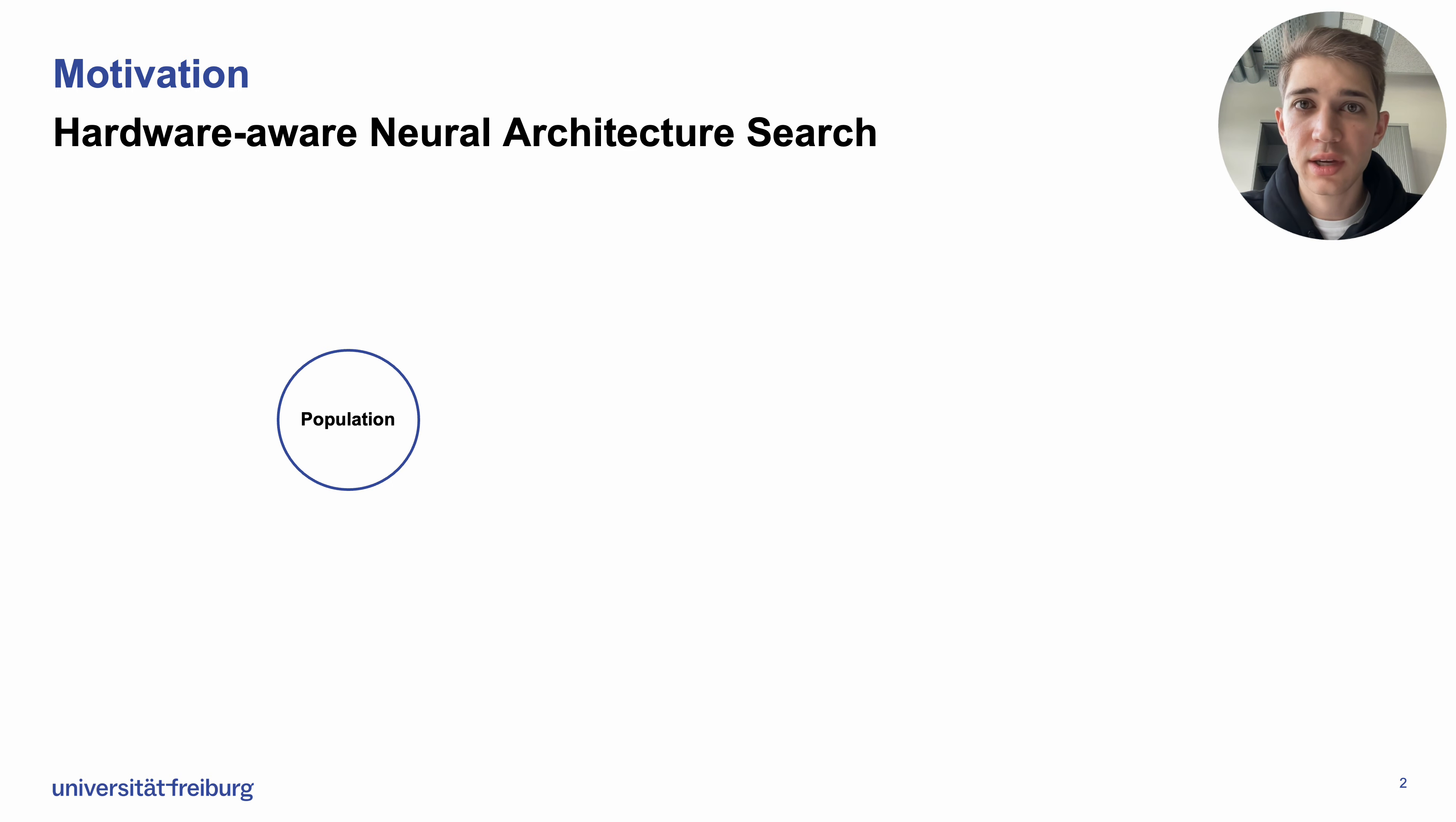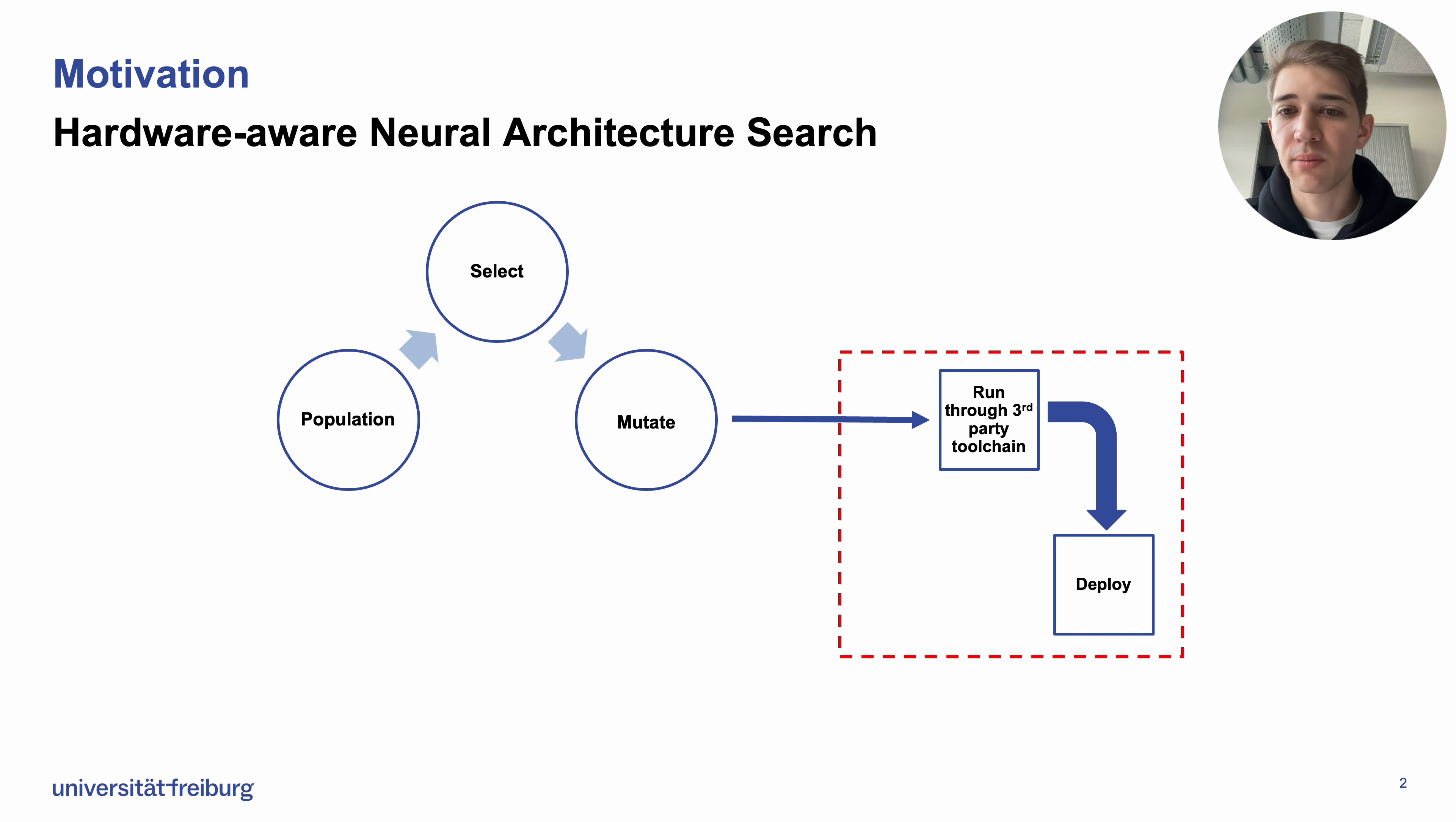We initially start with a population of architectures from which we select a few high-performing ones to cross over or mutate. Then we'd like to collect a hardware metric next to a dataset metric. For the hardware metric, we take our mutated architectures and run them through a third-party toolchain, deploy them on device, and retrieve the hardware metric, let's say latency. After doing that, we return these measured hardware metrics back to the search process and continue.